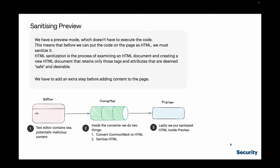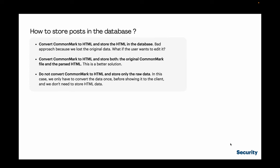The converter within the editor performs two tasks: convert CommonMark to HTML and sanitize the HTML. We then insert the sanitized HTML into the preview. We have to decide how to store data in the database. We have three options: convert CommonMark to HTML and store only the HTML (bad, as we lose the original data needed for editing), convert CommonMark to HTML and store both the raw CommonMark and the parsed HTML, or store only the raw CommonMark and convert it to HTML just before showing it to the client.